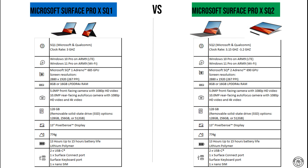The difference between these two processors is the clock rate. For the SQ1 it's a maximum of 3 GHz, while for the SQ2 it goes up to 3.15 GHz. In addition, the manufacturing technology differs between the two processors, but for the threads they are the same — they have 8 threads each.